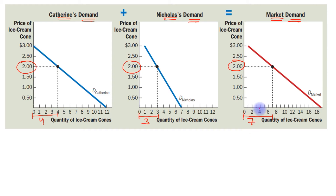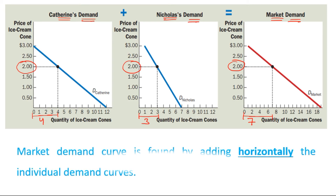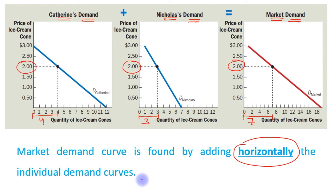So, in order to find out the total market demand at a price of $2, we just add up the individual quantities that can be found on the horizontal axis of individual demand curves. So, we can write: market demand curve is found by adding horizontally the individual demand curves.